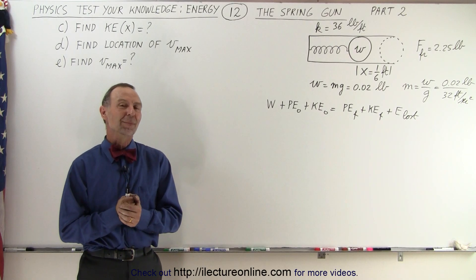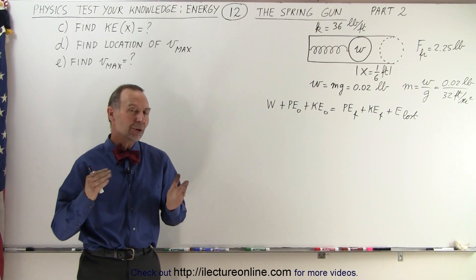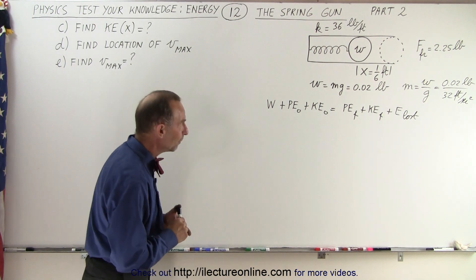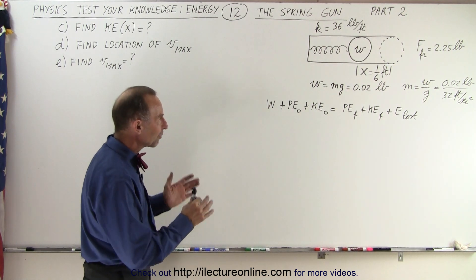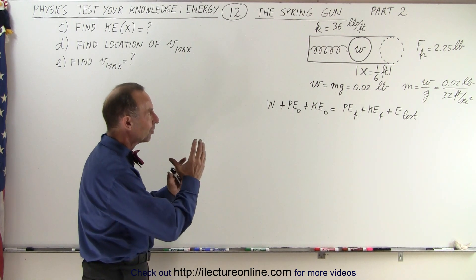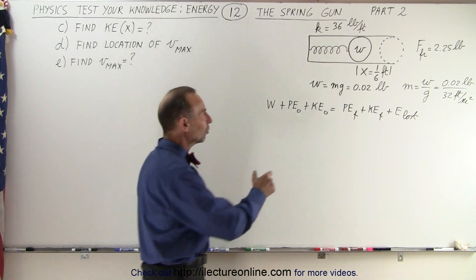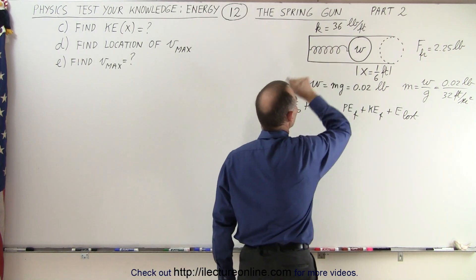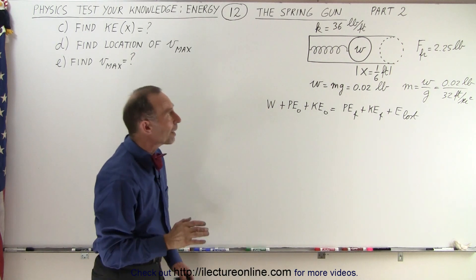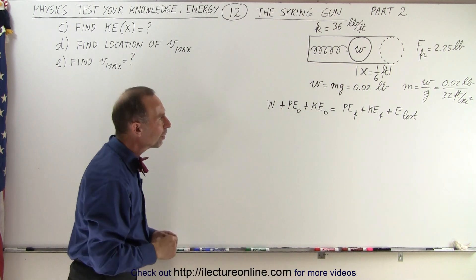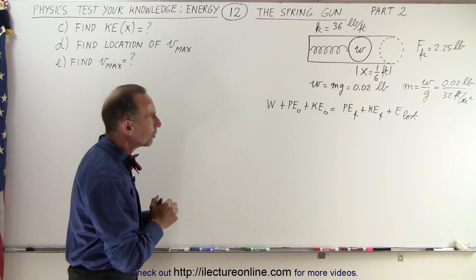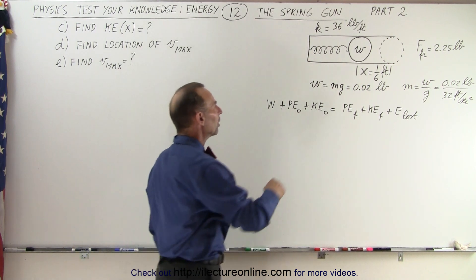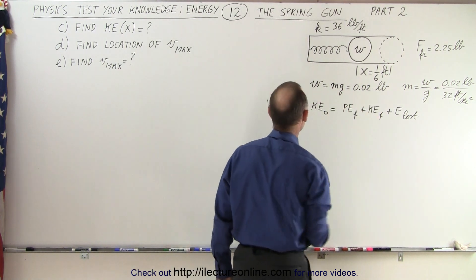Welcome to Electronline. If you liked part 1 in the previous video, you will like part 2 as well. Here we have a spring gun. We compress the bullet into the barrel. This is 1/6 of a foot, which is 2 inches. The spring constant is 36 pounds per foot. The friction force inside the barrel is 2.25 pounds and the weight of the bullet is 0.02 pounds.